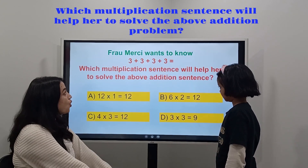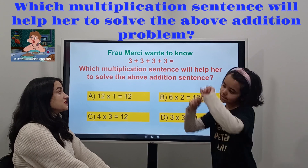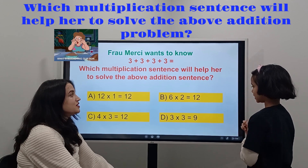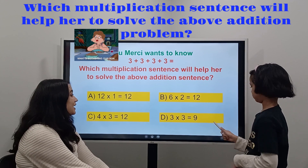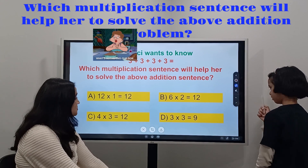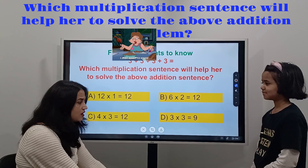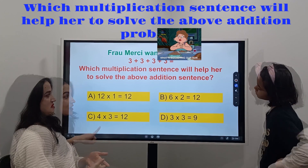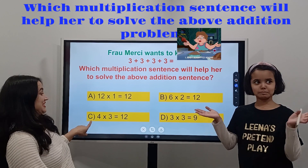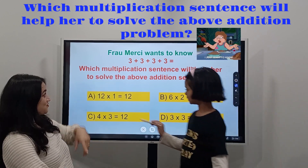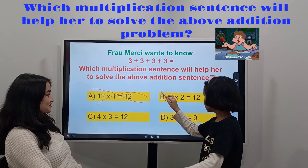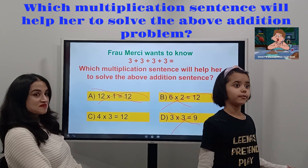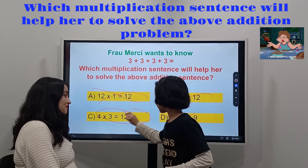Mercy wants to know: three plus three plus three plus three plus three equals what? Which multiplication sentence will help solve this repeated addition sentence? A: twelve times one equals twelve. B: six times two equals twelve. C: four times three equals twelve. Or D: three times three equals nine. This is wrong, this is wrong, this is wrong — so the correct answer is C: four times three equals twelve.